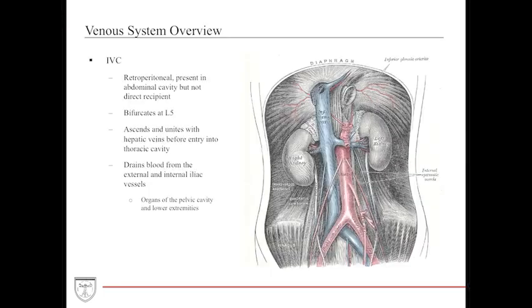The venous system of the abdominal cavity has two primary structures: the IVC and the portal venous system. The IVC is a retroperitoneal structure present in the abdominal cavity, but is not a direct recipient of drainage from any abdominal organs. It primarily receives blood from the common iliac vessels, including branches from the external and internal iliac, which receive blood from the pelvic cavity organs and lower extremities. The IVC bifurcates at the L5 region — one level below the aorta's L4 bifurcation.